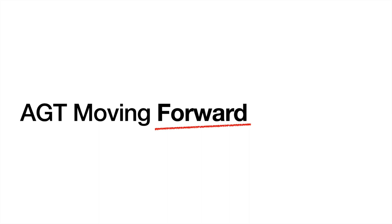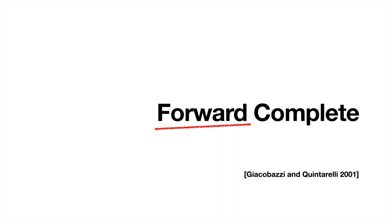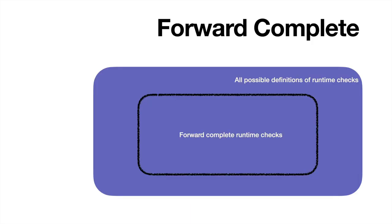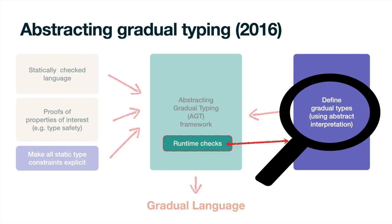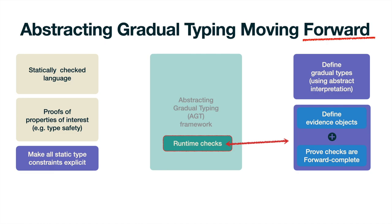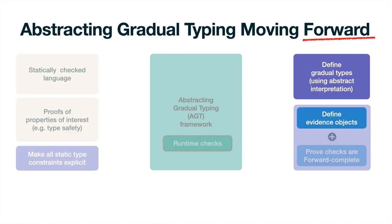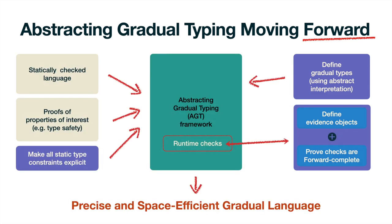In this paper, we aim to produce reusable design guidelines so that these problems will not impact future AGT developments. For that purpose, we have adapted the concept of forward completeness from abstract interpretation to the AGT framework. Forward completeness constrains the runtime checks arising from the definition of gradual types. The original definition of runtime checks for records of typing is not forward complete, but we replaced it with a novel definition called bounded rows and records, which we proved to be forward complete. Our work also shows that by constraining our runtime checks to be forward complete, we can further limit our appeals to intuition, and use the AGT framework to produce a gradual language that is both precise and space efficient.